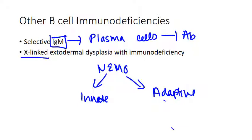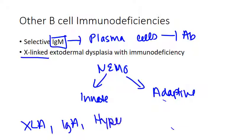That covers all of the B-cell deficiencies. The ones to focus on the most are XLA, selective IgA deficiency, and hyper-IgM — those are the big ones that people tend to think about when discussing how B-cells develop and how that process goes wrong.